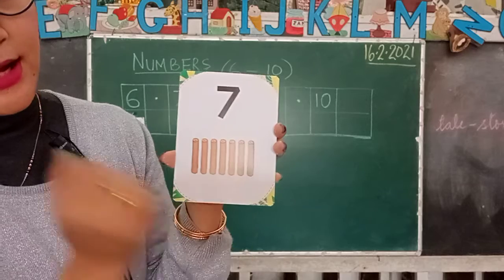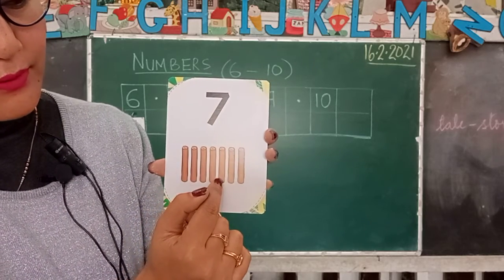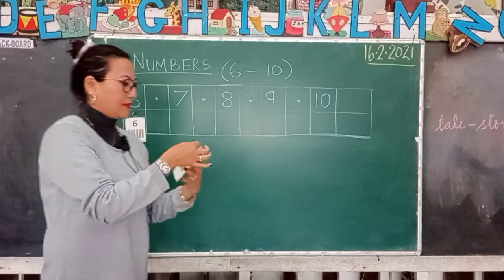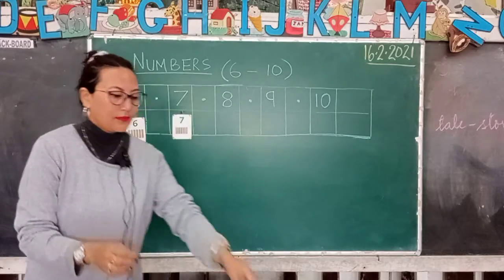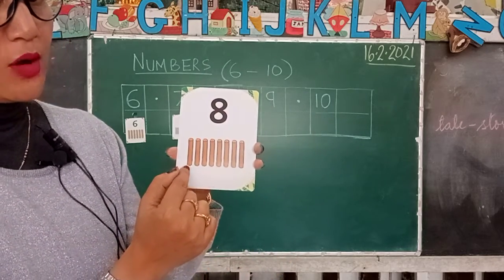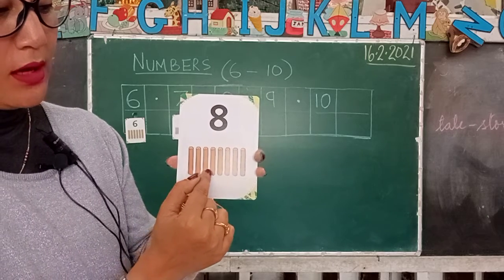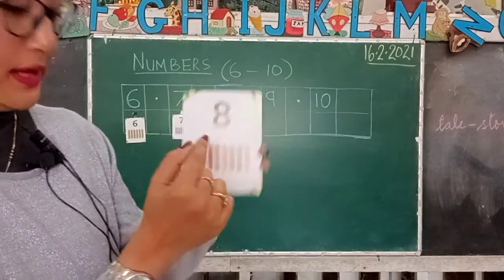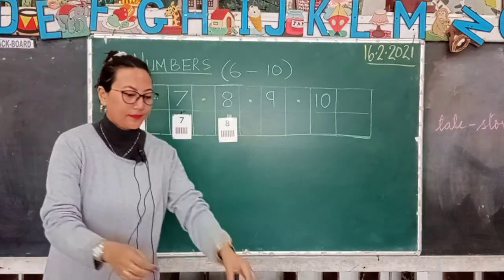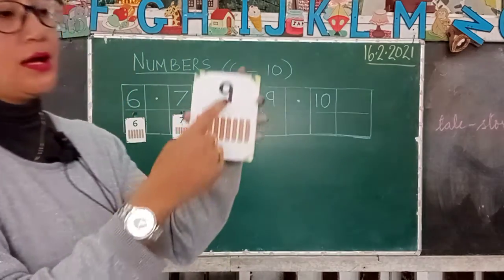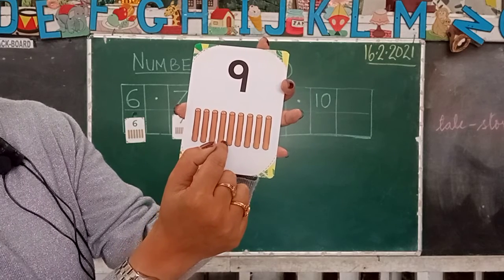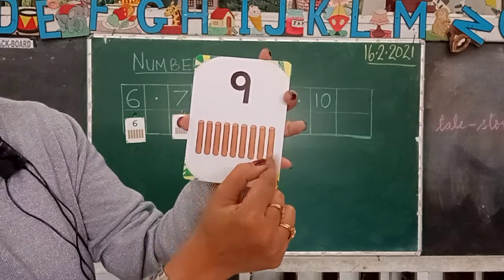Here is another card — number 7. Let's count the sticks: one, two, three, four, five, six, seven. This is your number 7. Now let's count again for number 8: one, two, three, four, five, six, seven, eight. That is number 8.